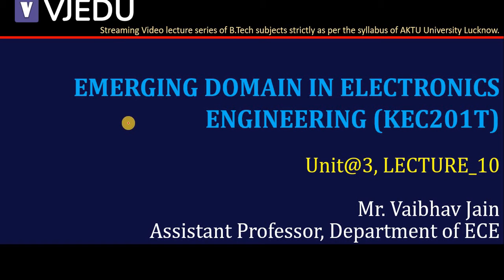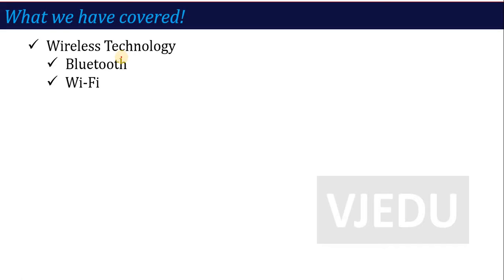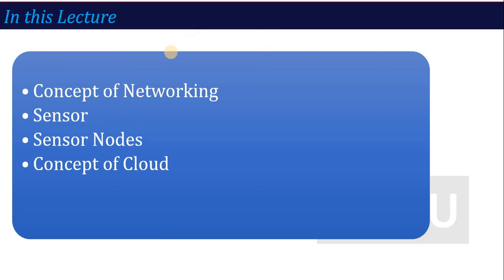Hello everyone, welcome to the video lecture series of Emerging Domain in Electronics Engineering. Subject code is KEC201T and here we are in lecture number 10 of unit number 3. In the previous lecture we discussed about wireless technology, what is Bluetooth and Wi-Fi technology. In this lecture we are going to talk about different topics like concept of networking, what do you mean by sensor, different types of sensor, what do you mean by sensor node, and what is the concept of cloud.